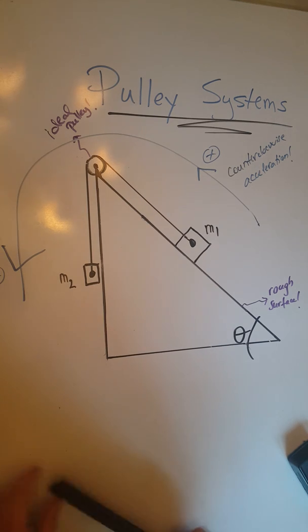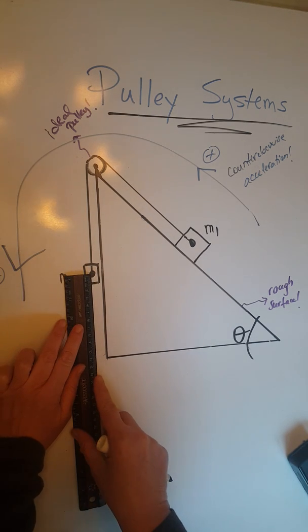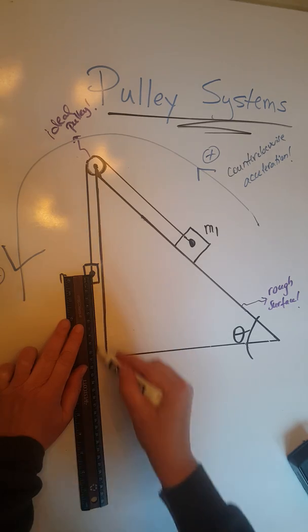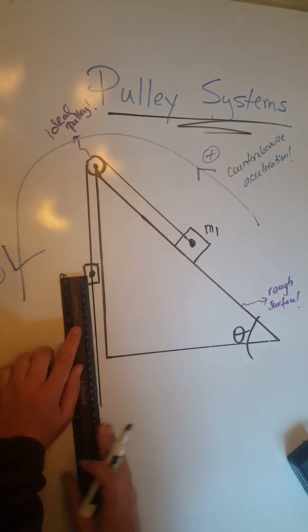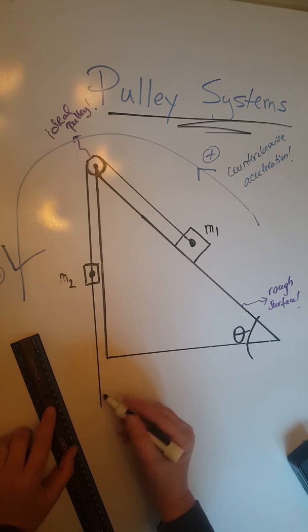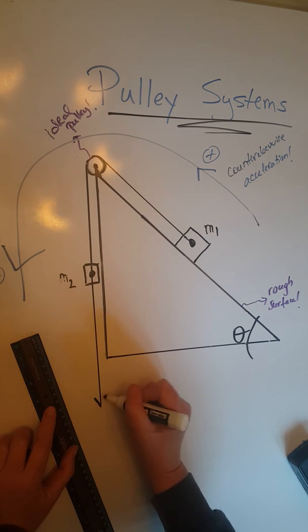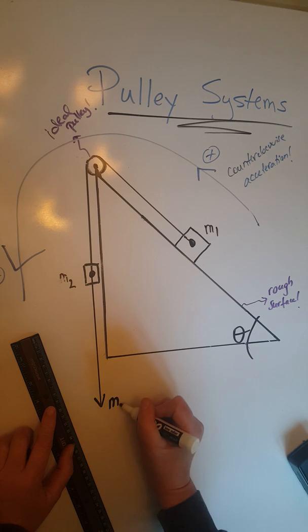We are going to draw a force of gravity here, M2G. I am going to draw it quite long because we have counterclockwise acceleration. So that tells me that this should be quite a long force here. Label it M2G.